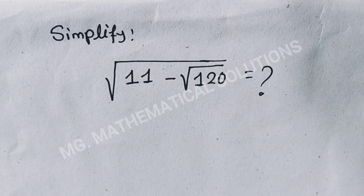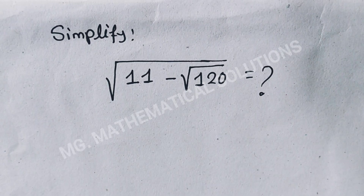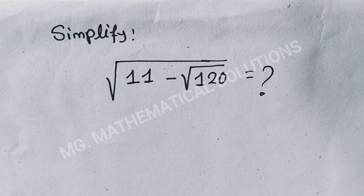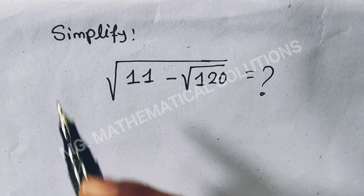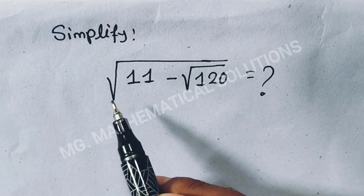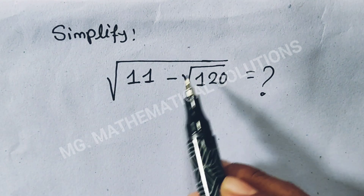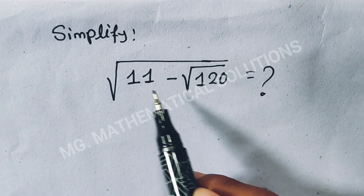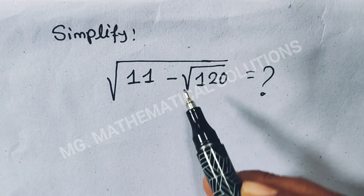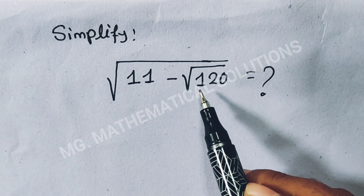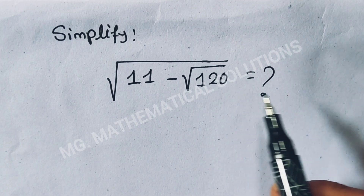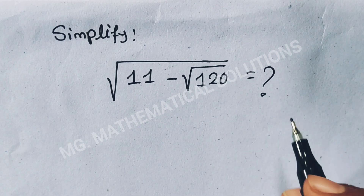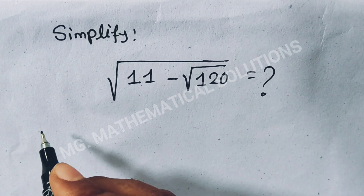Hello students. Today I solve a nice square root problem: simplify root under 11 minus root under 120. What does this equal? Let's see the solution.